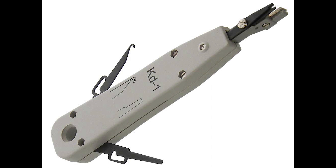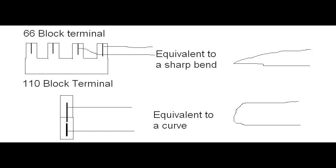In many environments, cable tasks are left to a specialized cable contractor. In others, there are admins who must connect the wires to a patch panel. There are two types of punchdown blocks: 66 and 110.